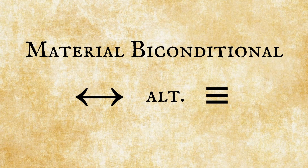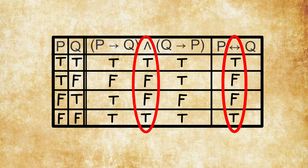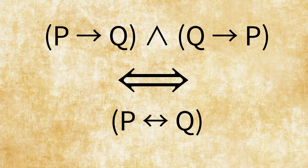We can show this by looking at the truth tables. If we start with the biconditional — as the logical symbol sort of shows us, it is simply a double material conditional, an arrow that goes both ways. So a biconditional can be expressed as: if p then q, and if q then p. As you can see, they are true and false in exactly the same places. Hence they are logically equivalent.